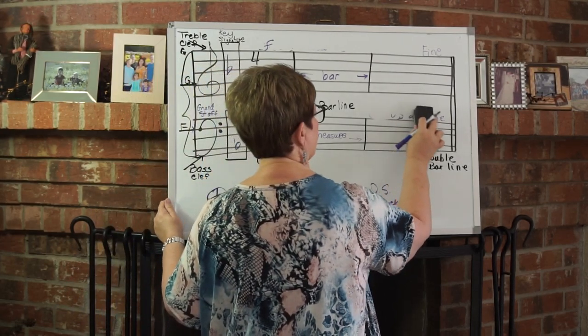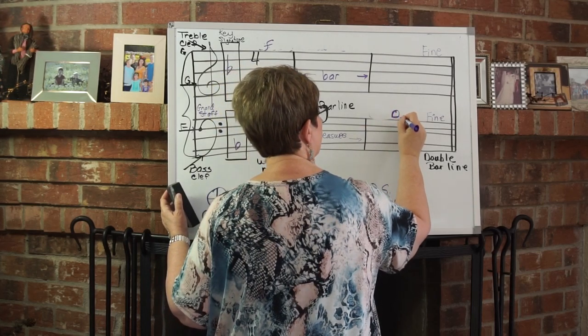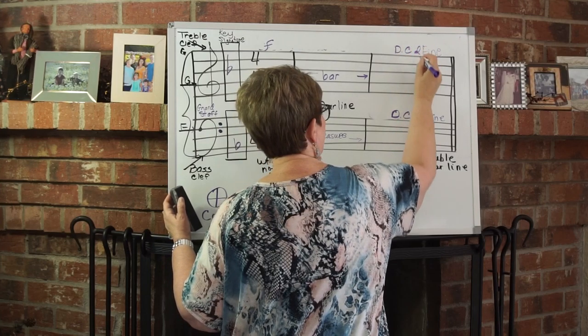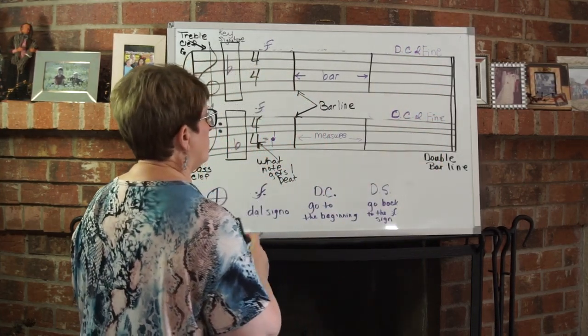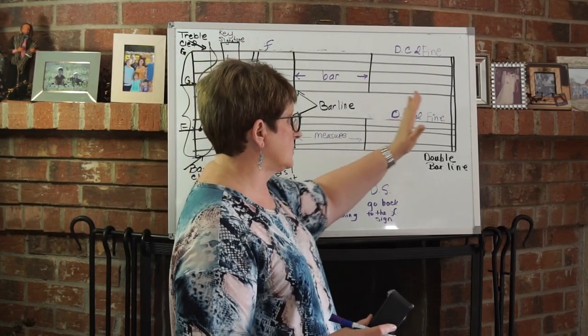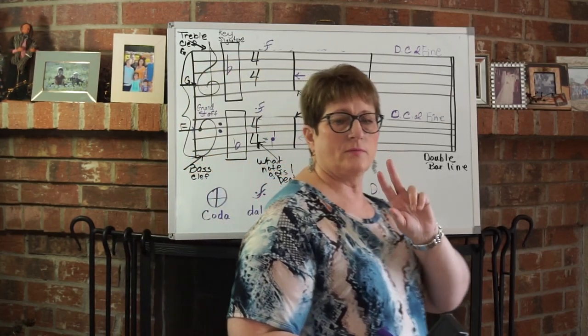D.C. al fine at the end of the song means go back to the beginning and sing until you see the word fine. So we're going to go all the way back to the beginning of the song and sing until we see the word fine. That way they don't have to reprint that song twice.